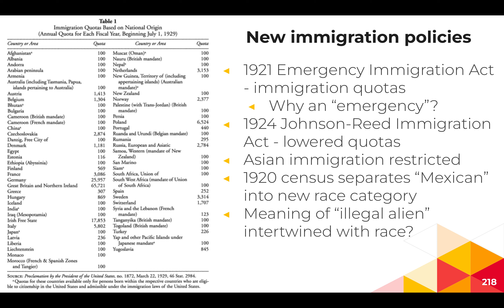Legislation generally set quotas on annual immigration. In 1921, Congress passed the Emergency Immigration Act, which set these quotas — called in response to the Bolshevik Revolution and subsequent civil wars in Russia. Then in 1924, Congress passed a package of laws nicknamed the Johnson-Reed Act, named after the bill's sponsors. The Johnson-Reed Immigration Acts lowered these quotas even further, as you can see in the diagram.